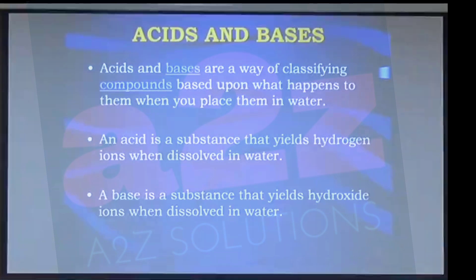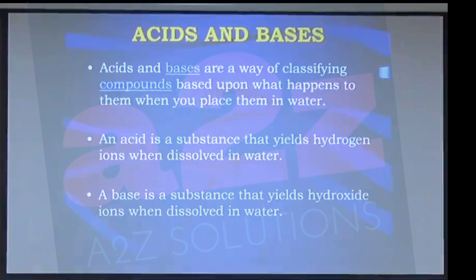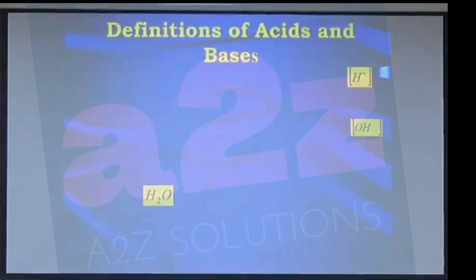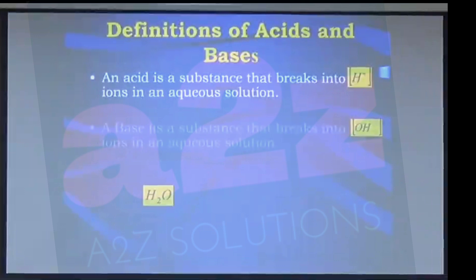Acids and bases are a way of classifying compounds based upon what happens to them when you place them in water. An acid is a substance that yields hydrogen ions when dissolved in water, and a base is a substance that yields hydroxide ions when dissolved in water. These hydroxide ions are also referred to as hydroxyl ions.